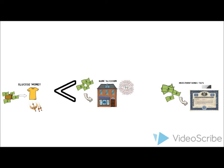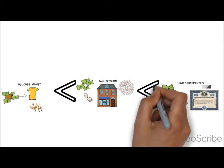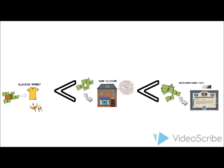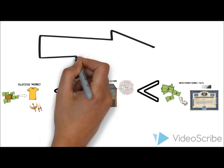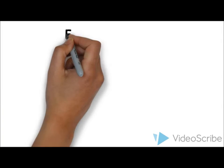And as we go from glucose to glycogen to fats, it takes longer and it becomes harder to use immediately for energy, because we first need to convert it into cash before we can spend it to buy things.